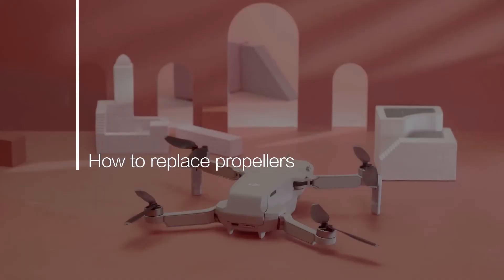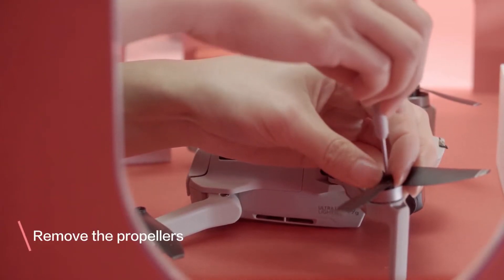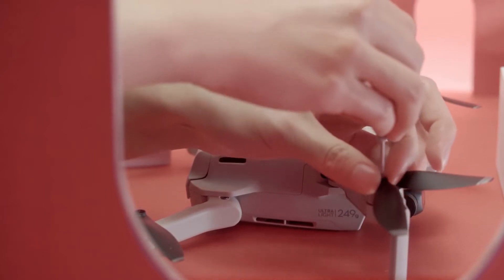How to Replace Propellers. Place the screwdriver on the screw's cross-recess and rotate it counterclockwise to unscrew.